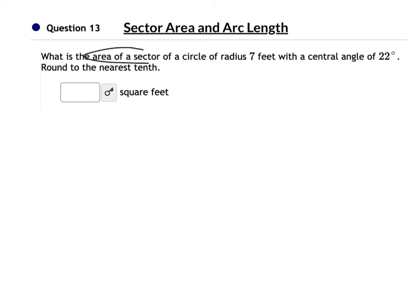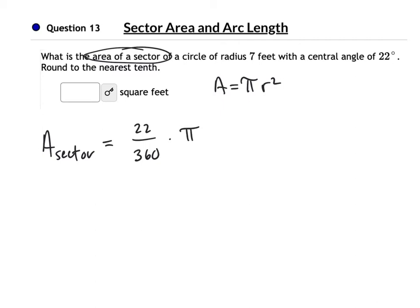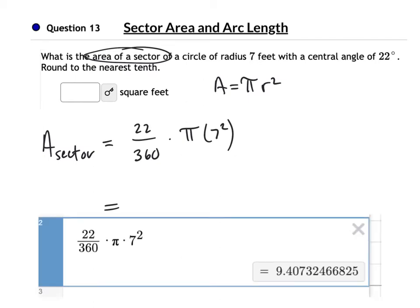No picture, but we're finding the area of a sector. We just need to figure out what fraction of the circle it is — it's 22 over 360, a very small section. Area is pi times the radius squared, so times pi times 7 squared. Plug that into Desmos — to the nearest tenth, that would be 9.4 feet squared.